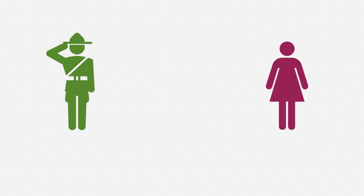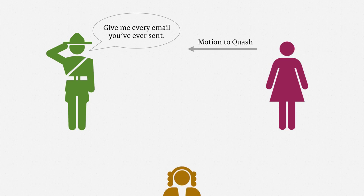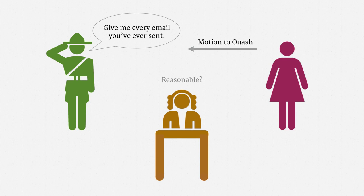The way to bring a reasonableness challenge to a subpoena is simply a motion to quash. Some government entity makes a demand, and the recipient of the demand moves to quash. It's then up to a judge to decide whether to enforce the subpoena, narrow the subpoena, or totally invalidate the subpoena.